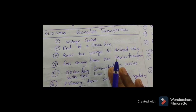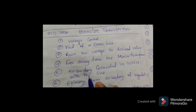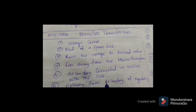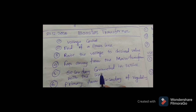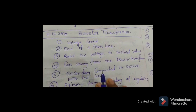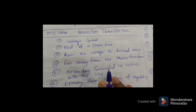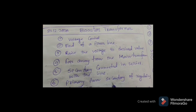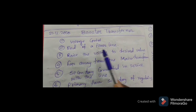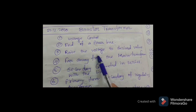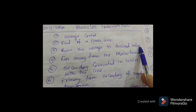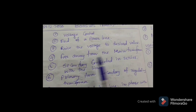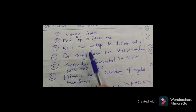What is the stray current? We will discuss that later. The booster transformer is being used in various systems. Its main purpose is to control the voltage. It is installed at the end of the power line to raise the voltage to the desired value far away from the main transformer — not near, but far away from the main transformer.